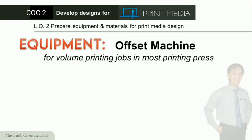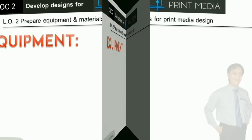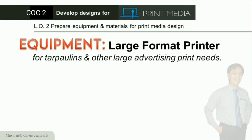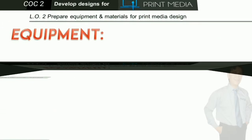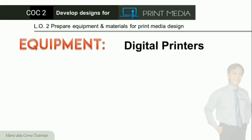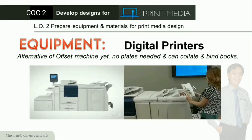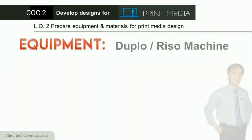Ang kasunod na i-prepare natin ay ang equipment. Kadalasan ginagamit ang offset machine sa printing press kung pang-maramihan ang ipiprint. Large format printer naman ang ginagamit sa pagprinta ng tarpaulin at para sa iba pang malalaking advertising printing. Digital printers naman ang ginagamit kung hindi gaano karami ang ipiprint, ngunit kapareho ng offset machine ang quality — hindi na nangangailangan ng plate tulad ng offset machine, at automatic na itong mag-arrange ng mga pages at mag-bind.